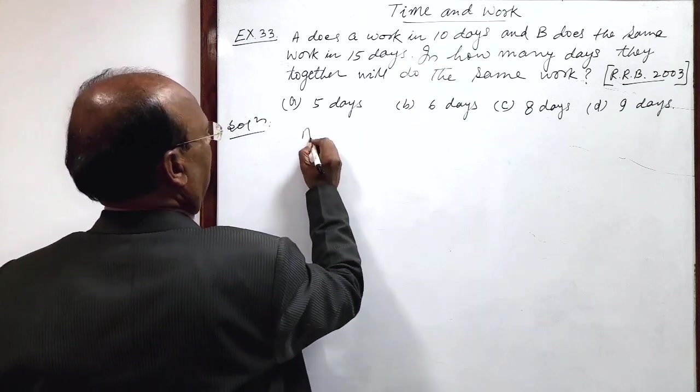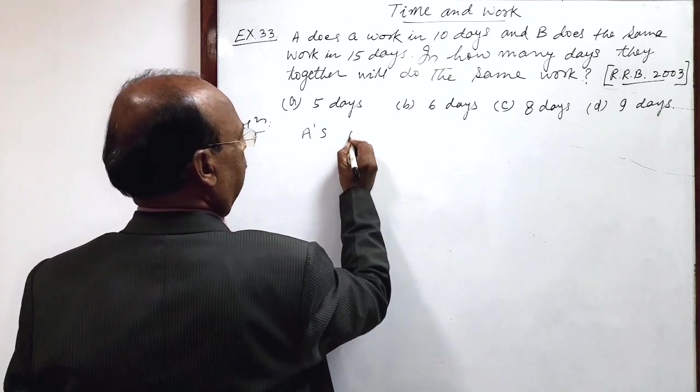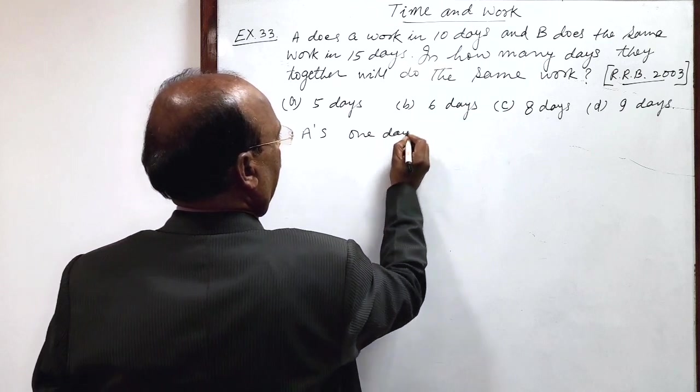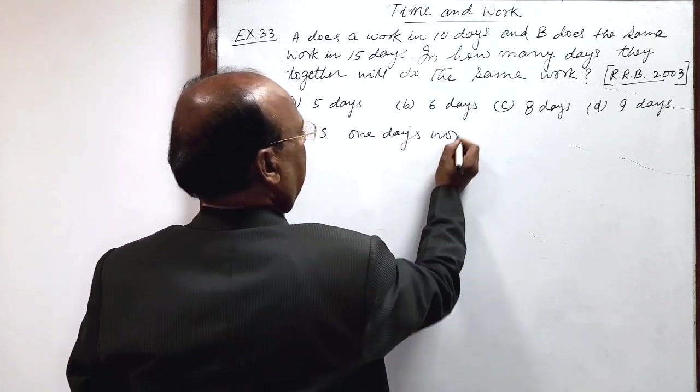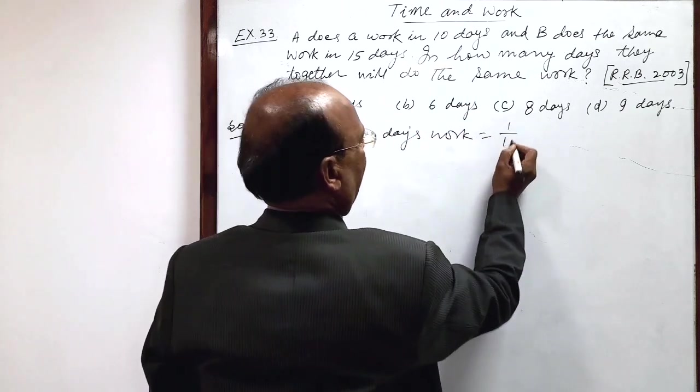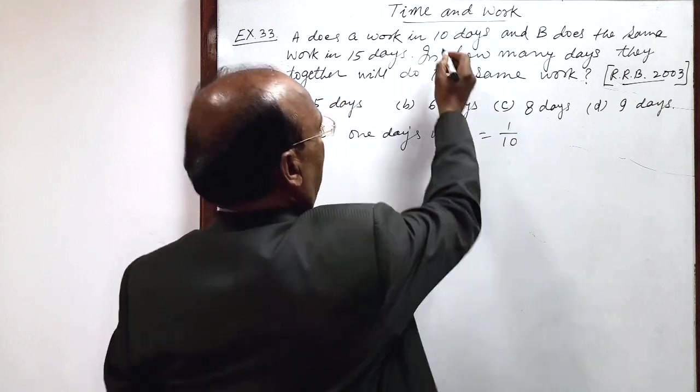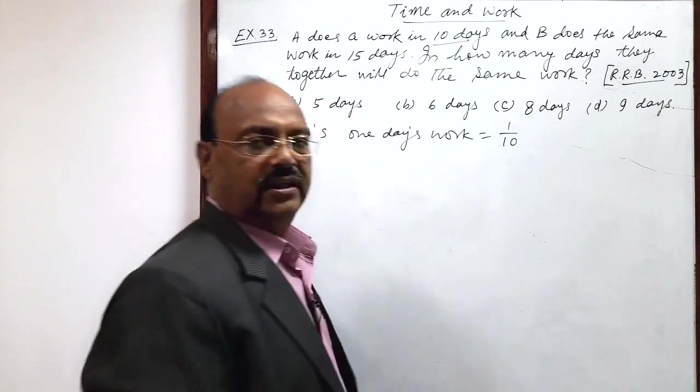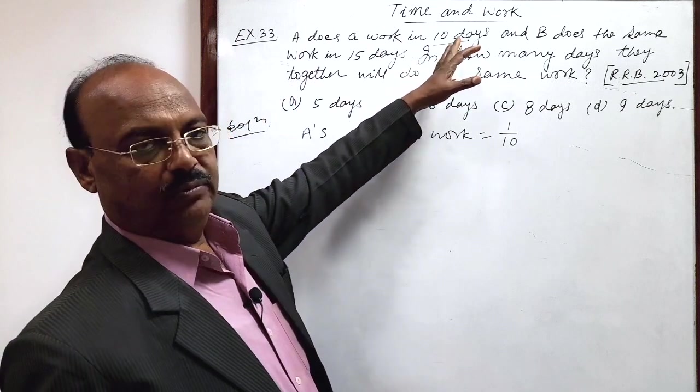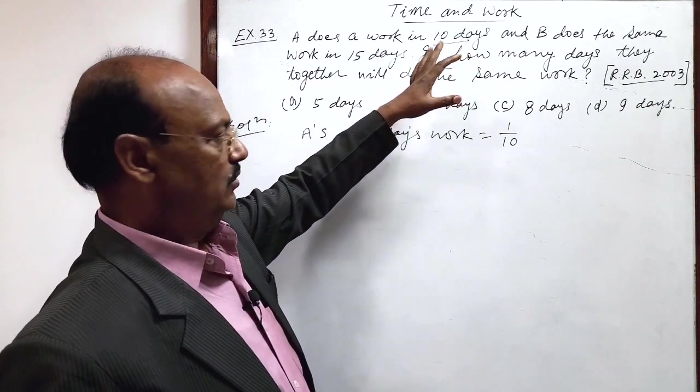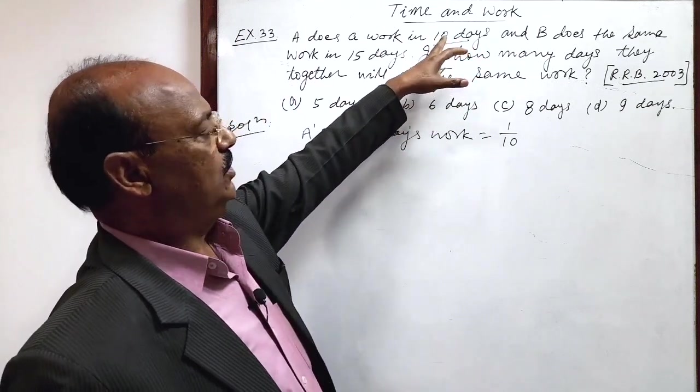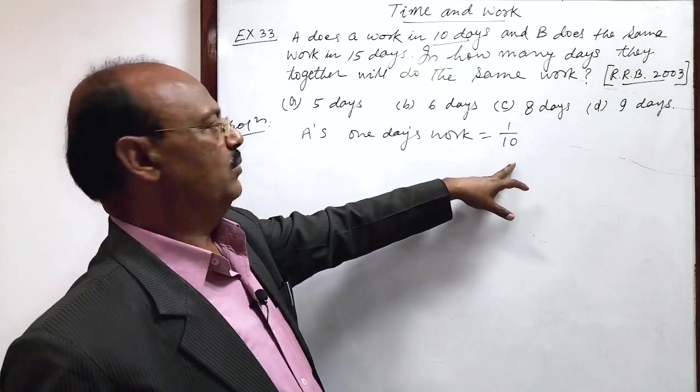We can write here, A's one day's work is 1 by 10. Reciprocal of number of days in which A completes the job, completes the work. 10 days, so its reciprocal is 1 by 10.